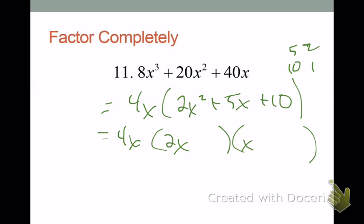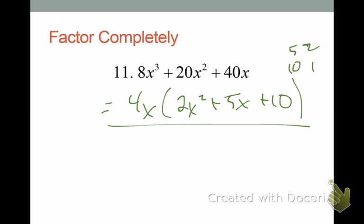Did you have a hard time factoring this one? You should have — because it's not factorable. At least the trinomial isn't. You can definitely factor out a GCF of 4x, and that gives you 2x² plus 5x plus 10. But 2x² plus 5x plus 10 you're not going to be able to factor further — using 2x and x for the first term, and 5 and 2 or 10 and 1 for the last term, no combination gets you 5. So we're not going to be able to factor it, and when we factor out the GCF, we're actually done. Sometimes trinomials are not factorable.